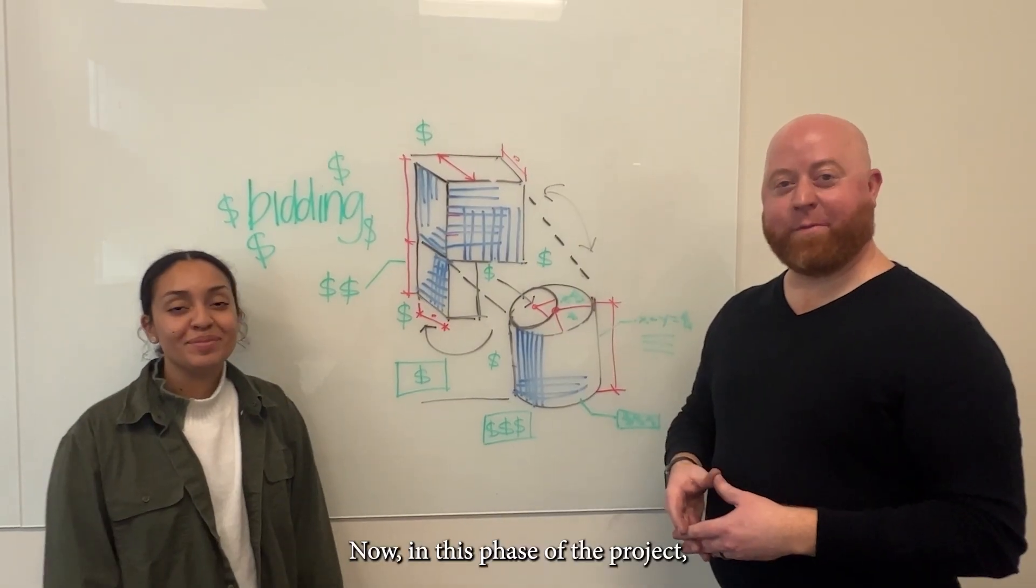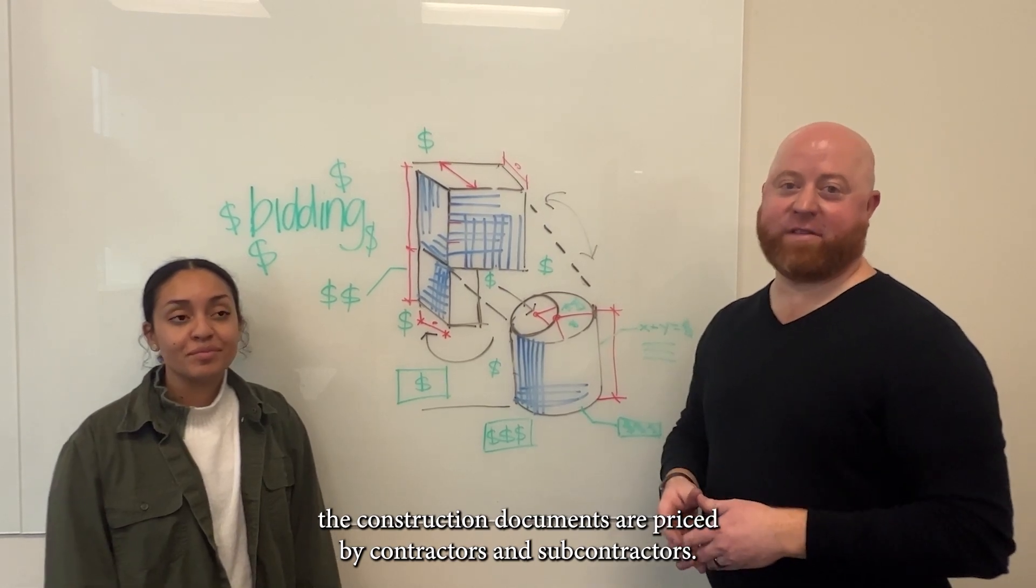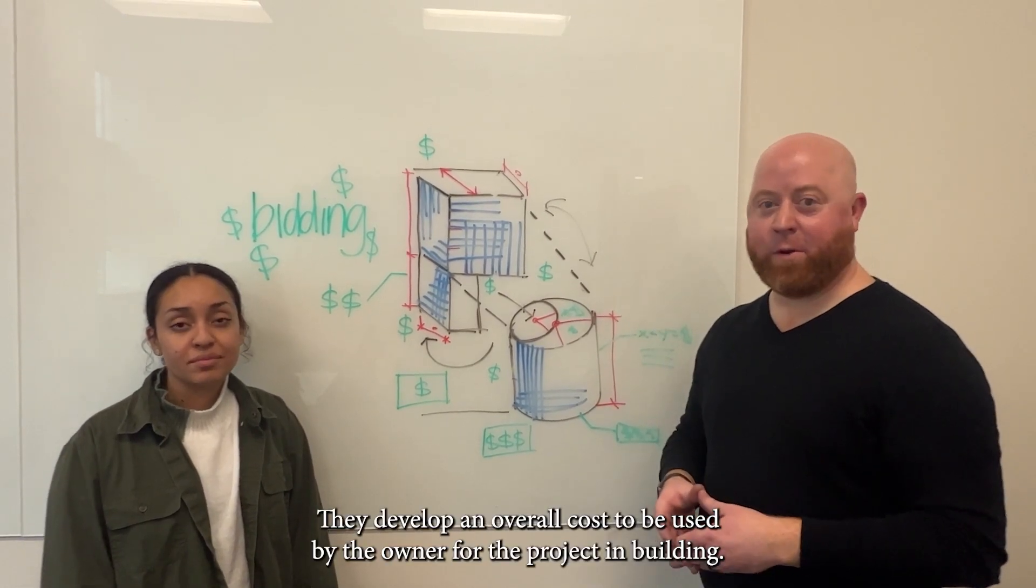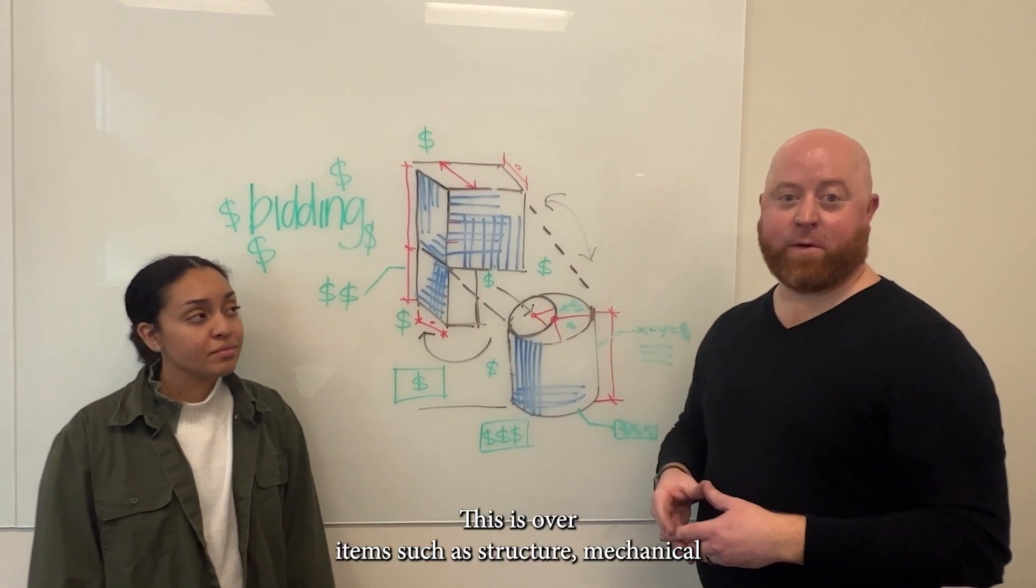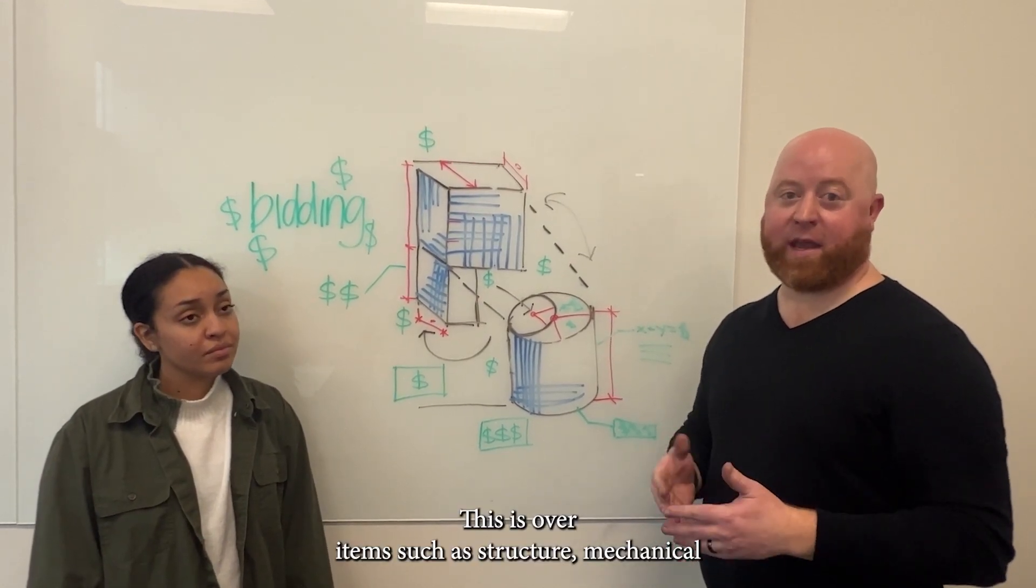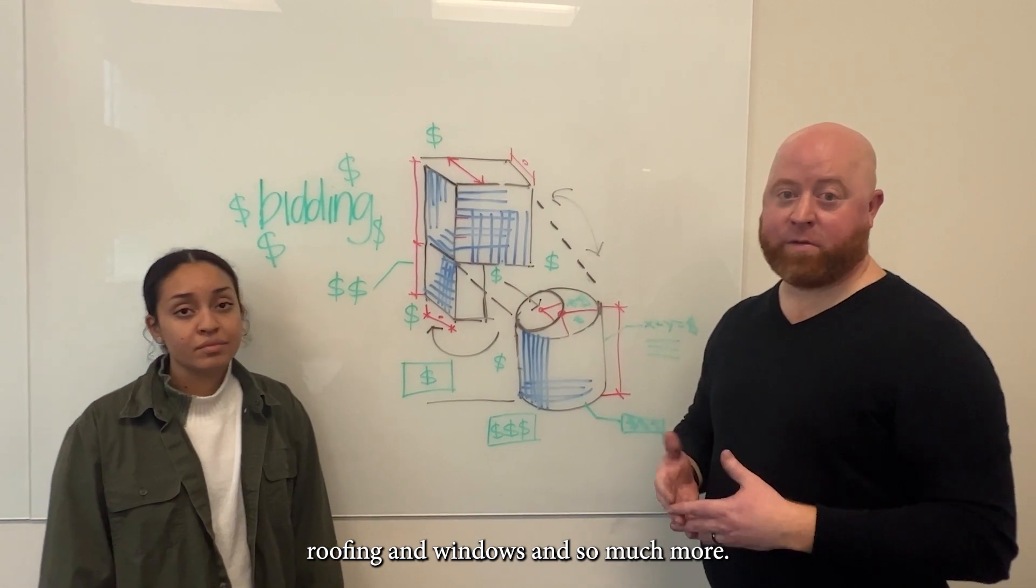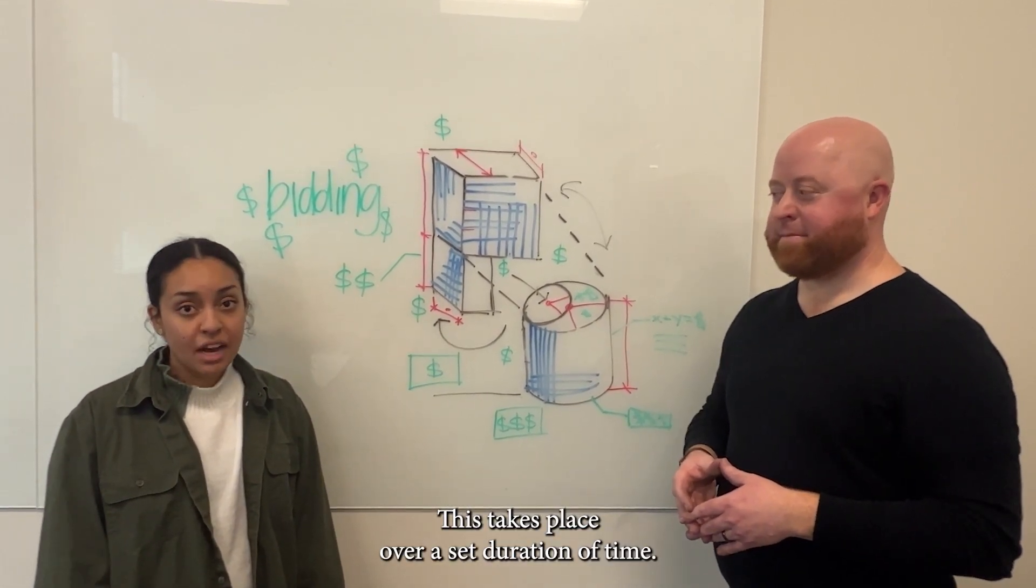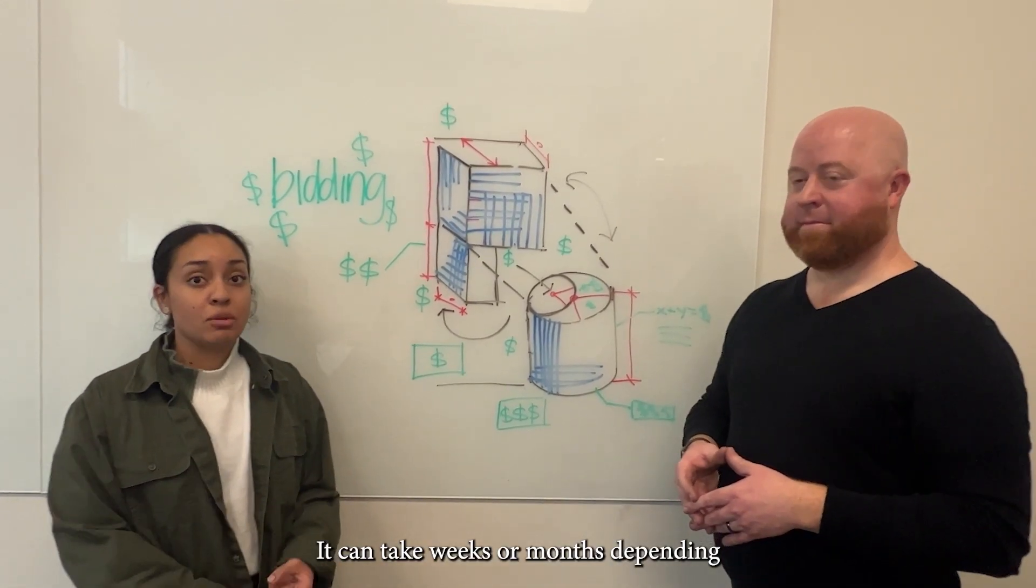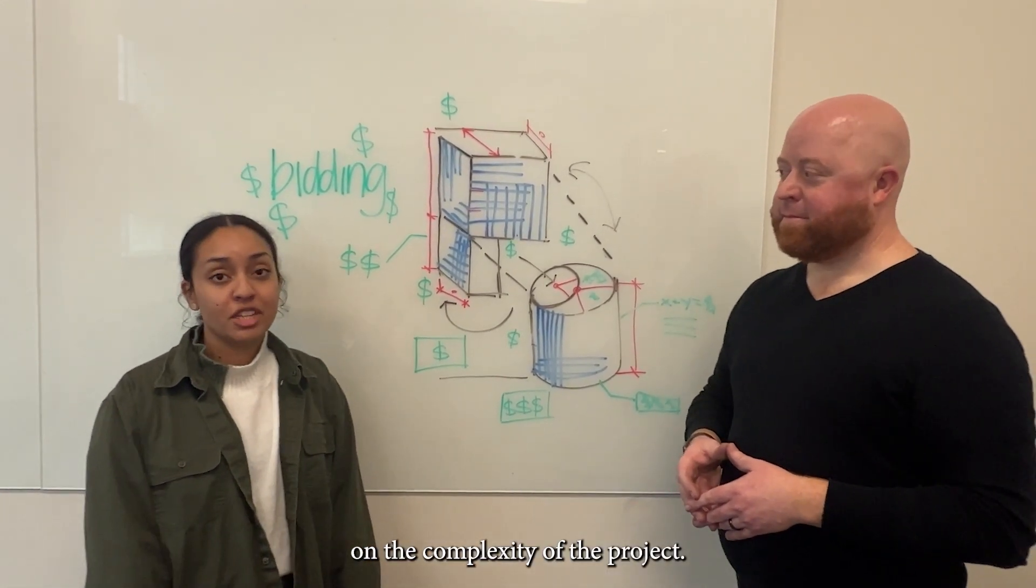In this phase of the project, the construction documents are priced by contractors and subcontractors. They develop an overall cost to be used by the owner for the project in building. This is over items such as structure, mechanical, roofing, and windows, and so much more. This takes place over a set duration of time. It can take weeks, days, or months depending on the complexity of the project.